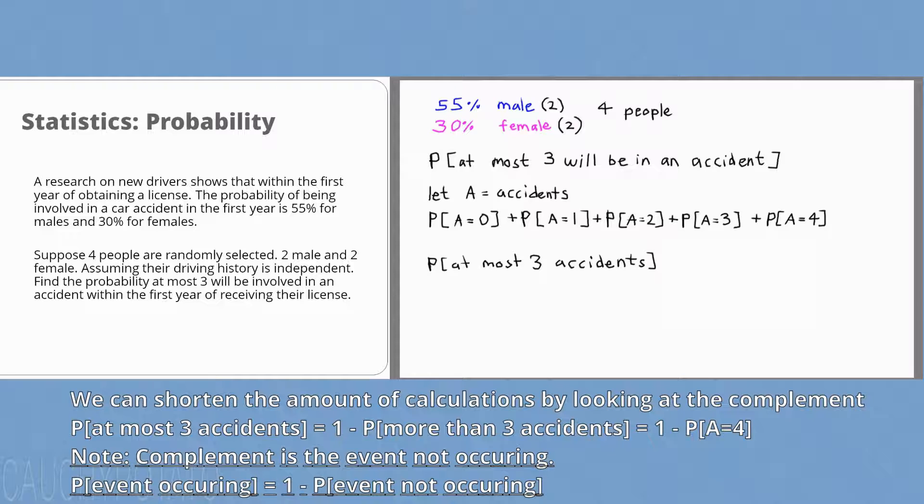So probability at most three accidents occurring is P(A ≤ 3), is equal to one minus P(A > 3), is equal to one minus P(A = 4).